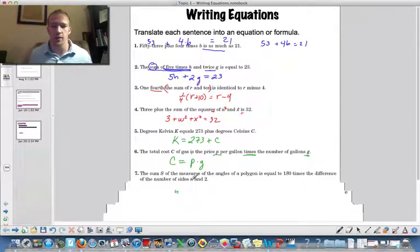The sum of s measures of the angles of a polygon is equal to 180 times the difference of the number of sides and two.